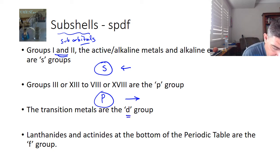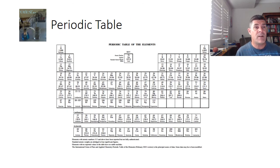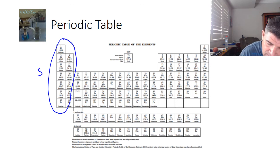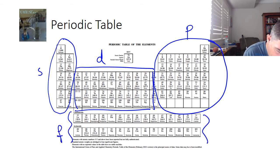The D are the transition metals. So, they're in the center of the table. And then, the ones that are sort of hanging down the bottom are the F group, which are the lanthanides and actinides. So, when you look at the periodic table, this is what you can see. These two groups here are our S. These ones over here are our P. In the middle is our D. And then, these two down the bottom are our F.